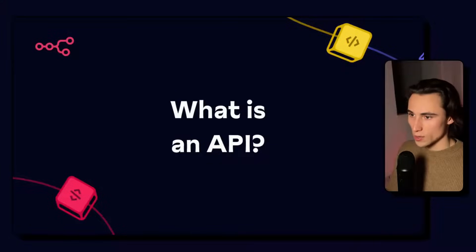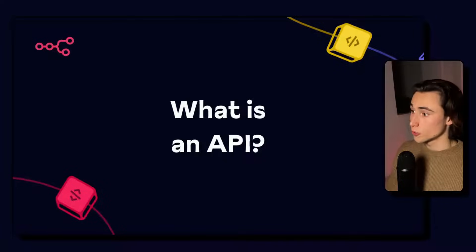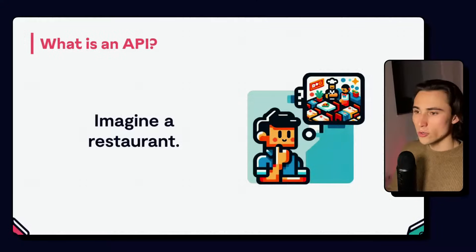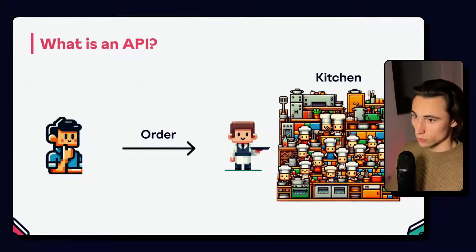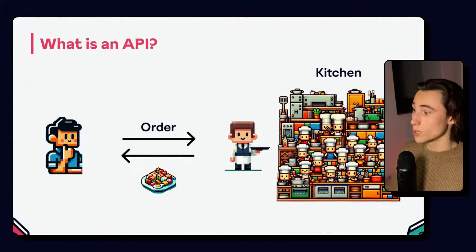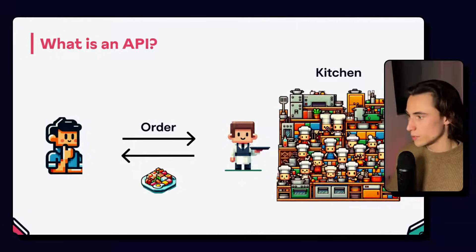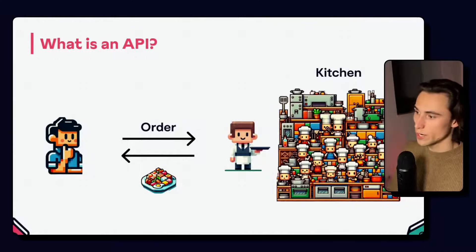So first of all, what is an API? I'd like to start by explaining an analogy that is going to be very useful for understanding not only what an API is, but also the different parts and names associated to them. Imagine you're sitting at a restaurant and you sit at a table. How do you get food? Well, you ask a waiter, and the waiter is going to take your order and bring it to the kitchen. Once the kitchen is done preparing your food, the waiter will bring back your food to the table. This is very similar to how an API works, and we're going to be using this analogy to explain the different parts of an API.